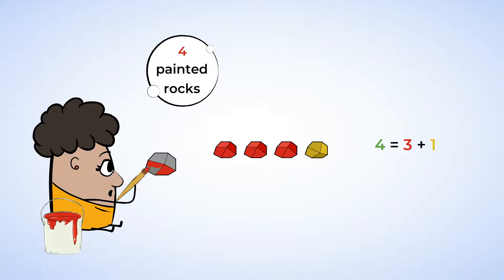I wonder if there are even more ways to make four. What if we flip over another rock? Shiny. Now we have two red rocks and two gold rocks. But are there still four rocks? Let's count. One, two, three, four. Yes, there are four. So two and two make four.